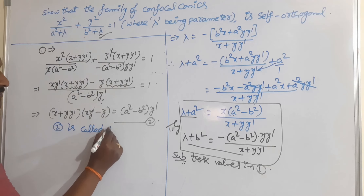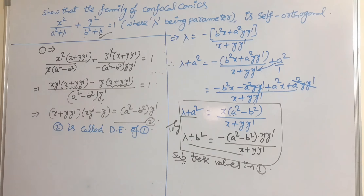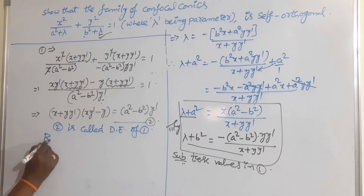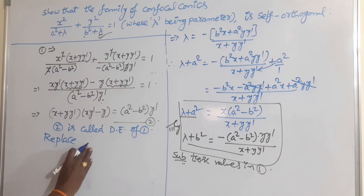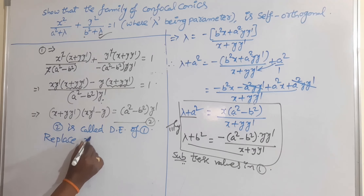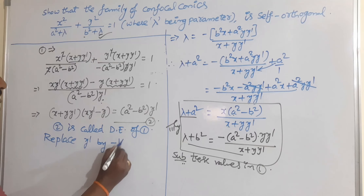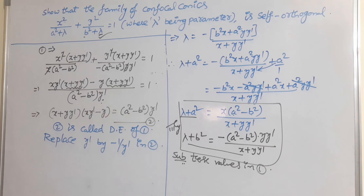Now, to find the differential equation of the orthogonal trajectories, we replace dy/dx by −dx/dy. Since we are representing dy/dx as y', we replace y' by −1/y' in equation (2).